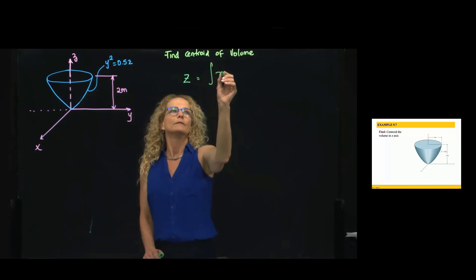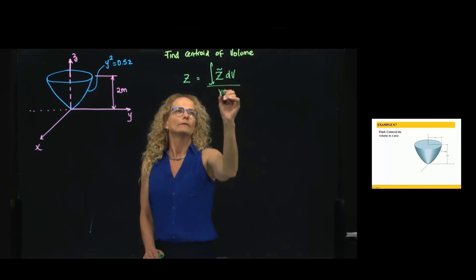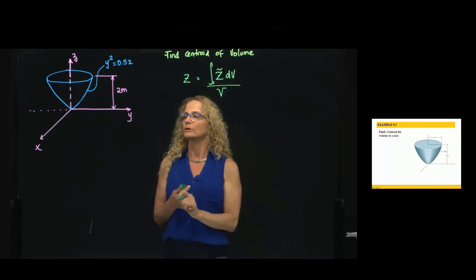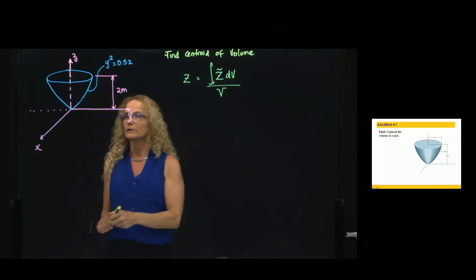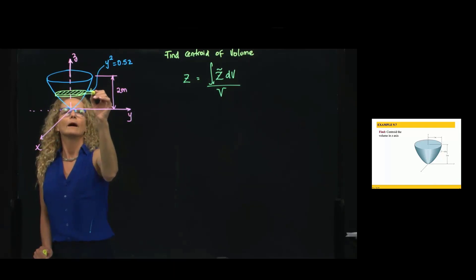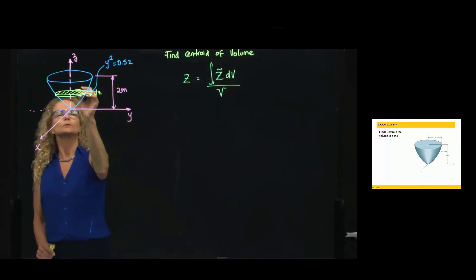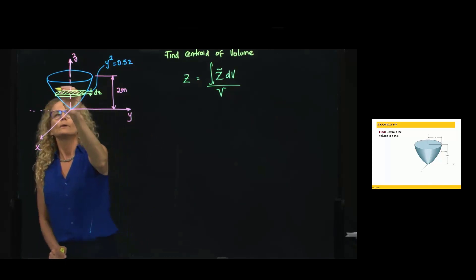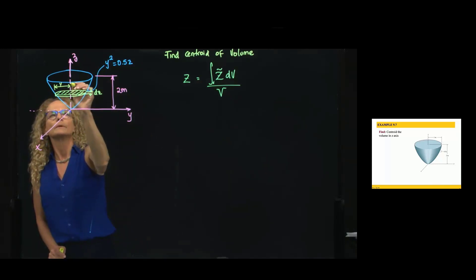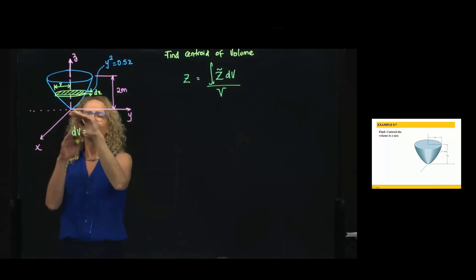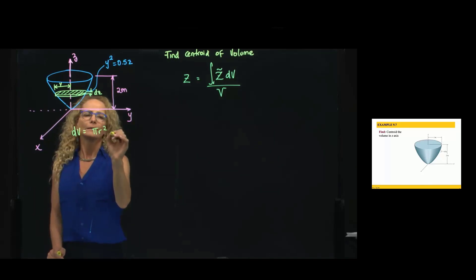So, instead of doing an integral over the volume, which is a triple integral, we can find a way to do just a one-dimensional integral. We will draw a coin over here — this is a coin that has a height dC. Since we know the function that describes how this goes wider by Y in terms of C, we can say the radius of that coin is equal to Y. So, my differential of volume will be equal to that plane area, which is π R² dC.